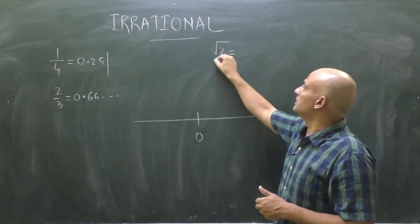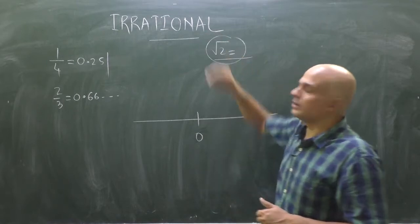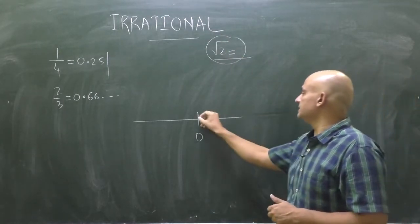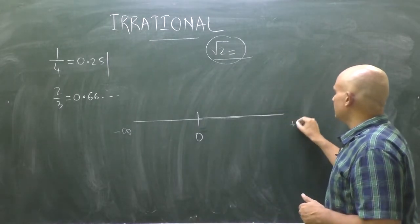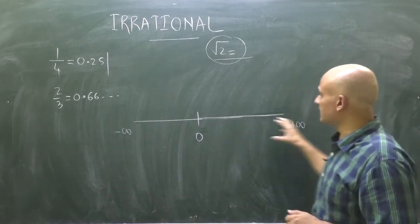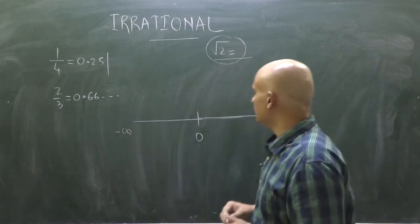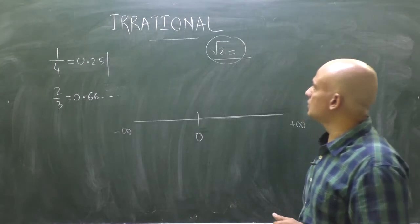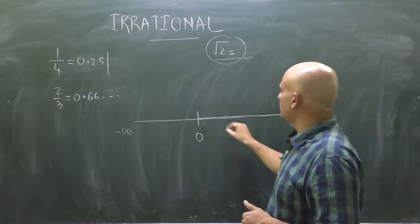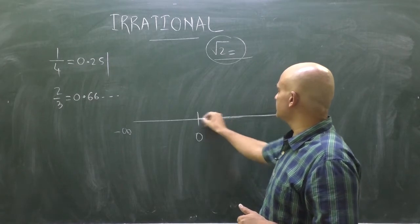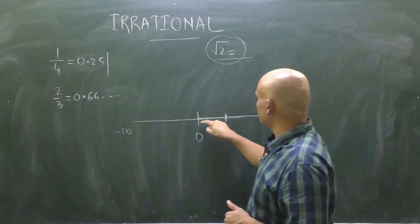If I wish to express these numbers on the real line, rational numbers can be expressed on the real line, but for irrational numbers we do not know the exact value. Let's see how to draw these numbers on the real line, which expands from minus infinity to plus infinity. Let's find where root 2 will be located.